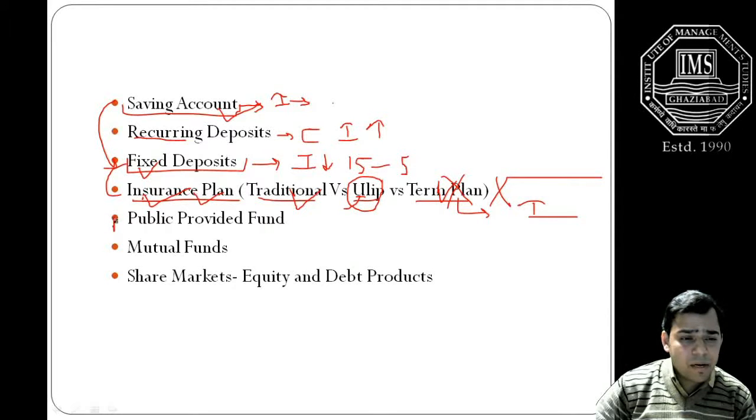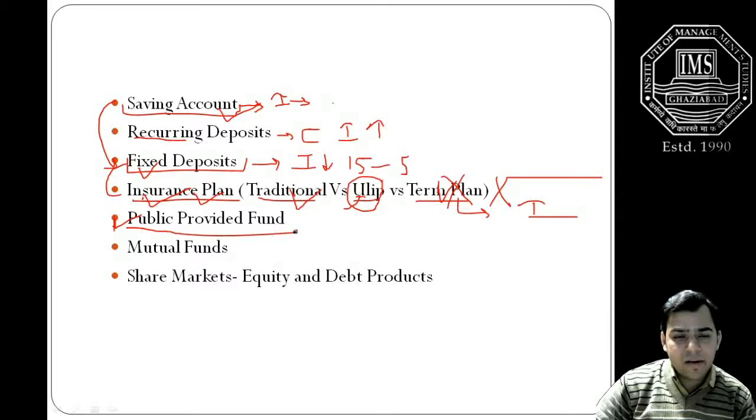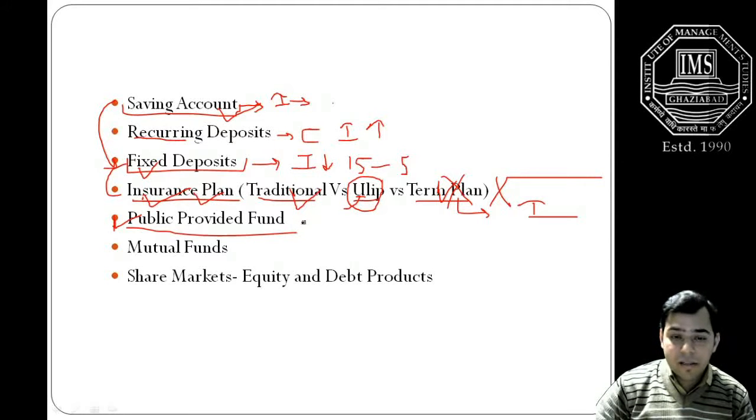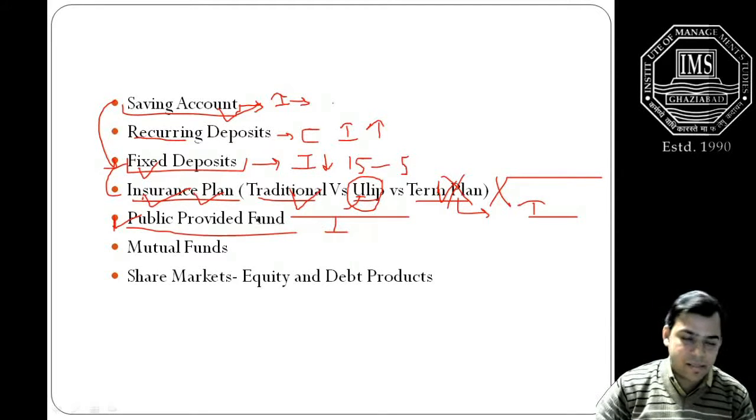Next important component of the small saving is the Public Provident Fund. It is very much important that every small investor should go for PPF. Again, the returns are not on the higher side, but still the protection of principal amount along with the interest.